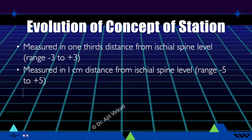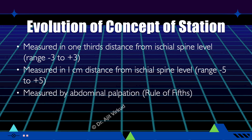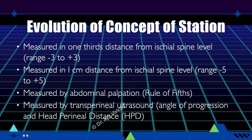Since the presence of caput made estimation of station by vaginal examination difficult, the method was later changed to estimation by abdominal palpation using the rule of fifths, which will be explained later. Recently, successful attempts have been made to assess fetal station accurately by transperineal ultrasound using concepts such as angle of progression and head-to-perineum distance.